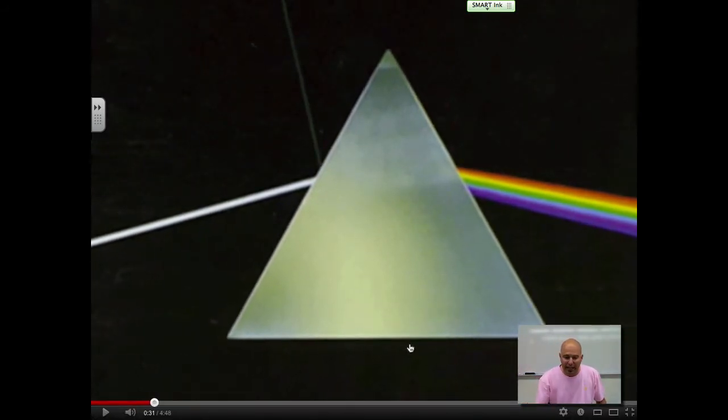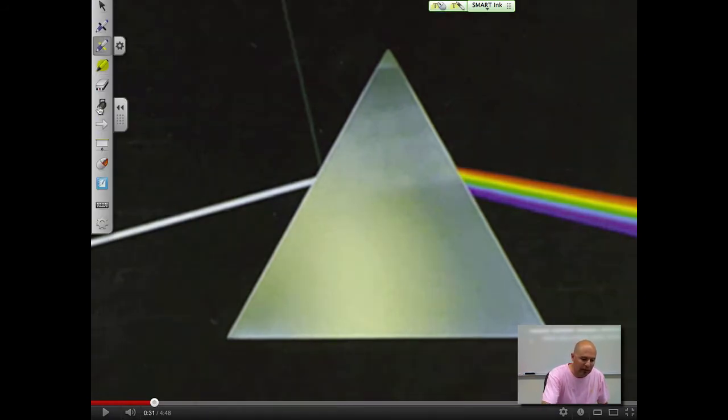I'd love to keep going but again you can kind of see here on my drawing of my prism we've got the red on top, the violet on the bottom, and again it's because the red does not bend as much as the violet does due to the fact that it's got a longer wavelength.